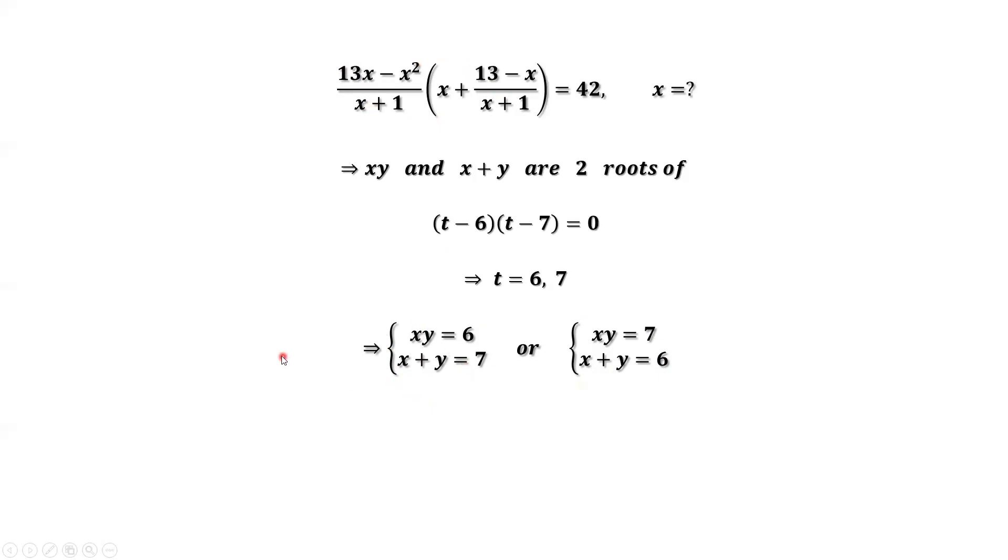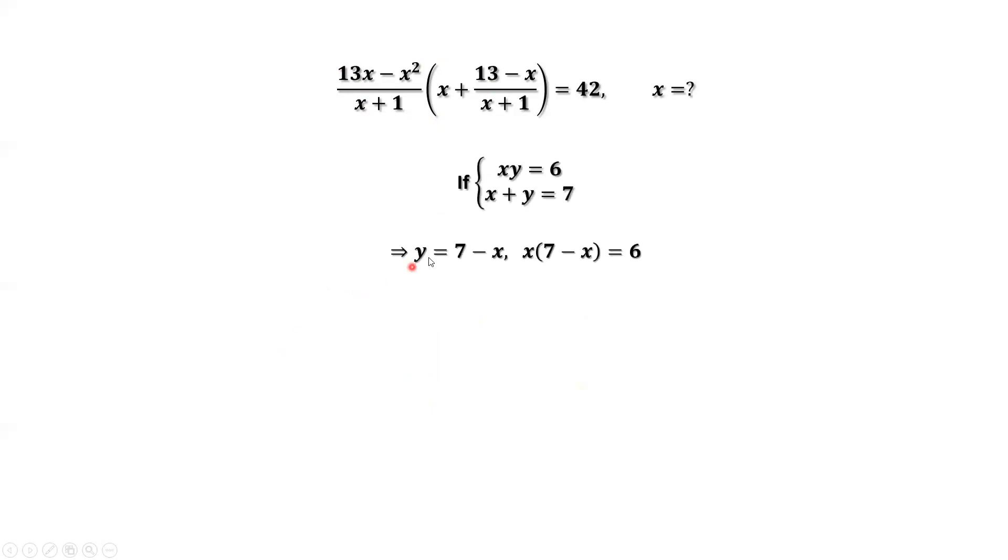To solve the first system, we have this result. Use the second equation. We can imply y equals 7 minus x. Replace y from the first equation. We have x times 7 minus x, this part is y, equals 6. Continue to simplify. We have x squared minus 7x plus 6 equals 0. Solve this equation for x. Factoring the left-hand side or using the quadratic formula, we have the first two roots for this equation: x equals 1 or 6.